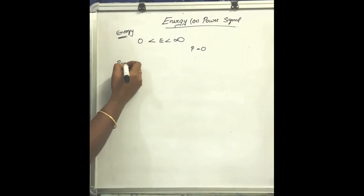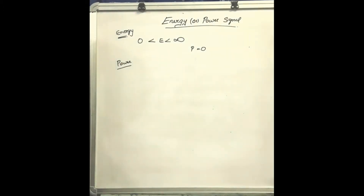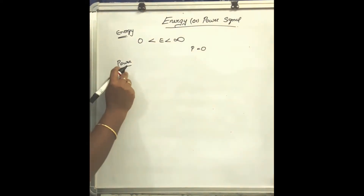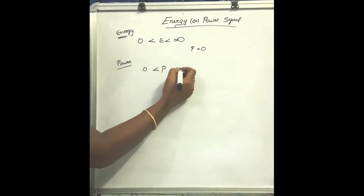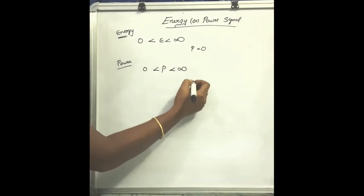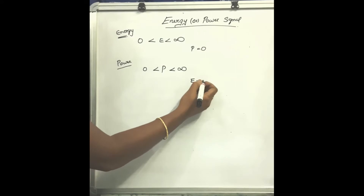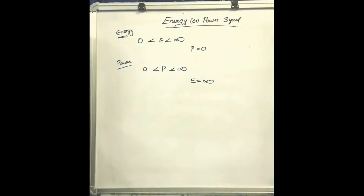Now comes the power signal. A signal is said to be a power signal if its normalized power is non-zero and finite. The power signal has power lying between zero and infinity, where energy is equal to infinity. So these are the two conditions for energy and power signals.